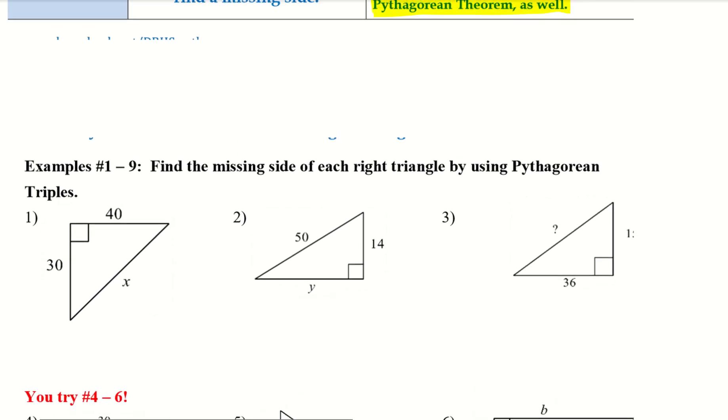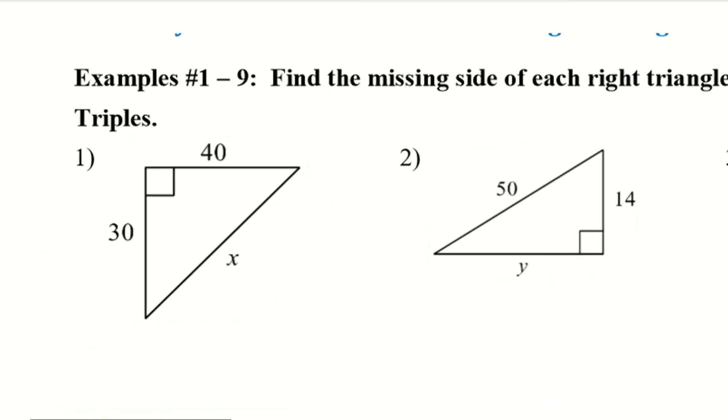Alright, so let's go ahead and do 1 through 9. So find the missing side of each right triangle by using the Pythagorean triples. So, number 1, we have 30, 40, and I'm trying to figure out what X is. Knowing what we know about the Pythagorean triples, I can tell you that this side is 3 and this side is 4. So, therefore, if you can turn back to the other page and see, we have a Pythagorean triple that is 3, 4, 5.